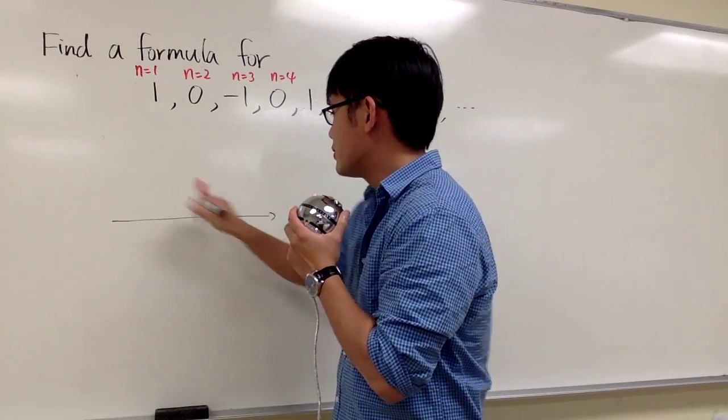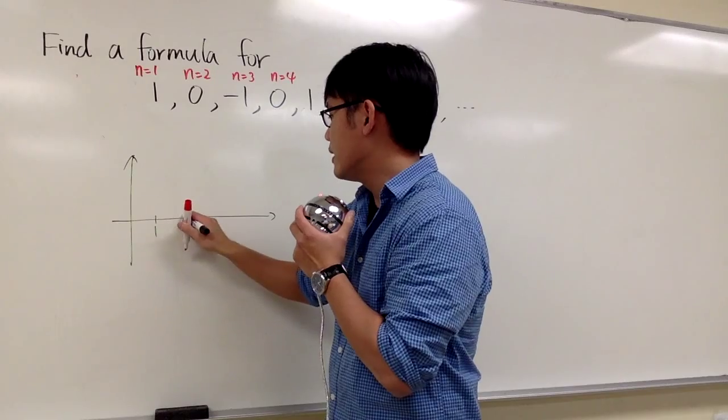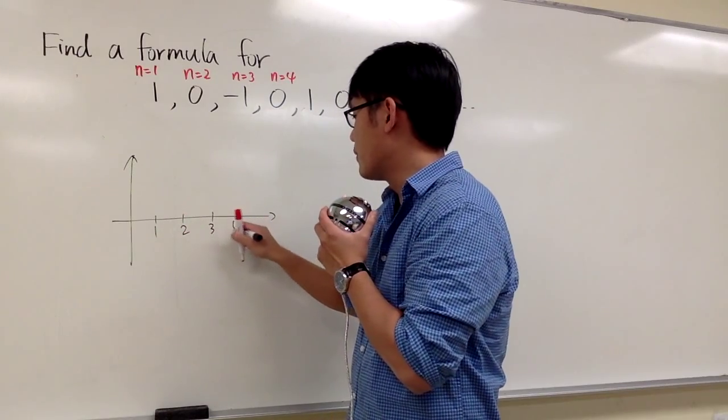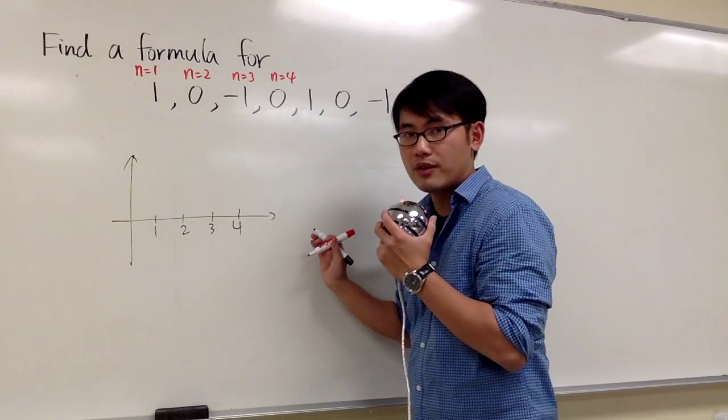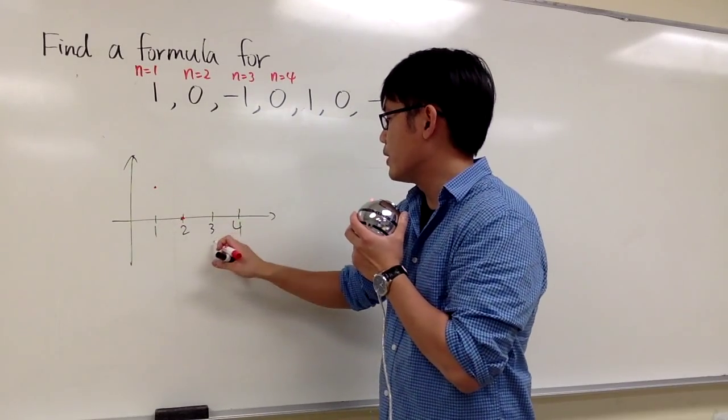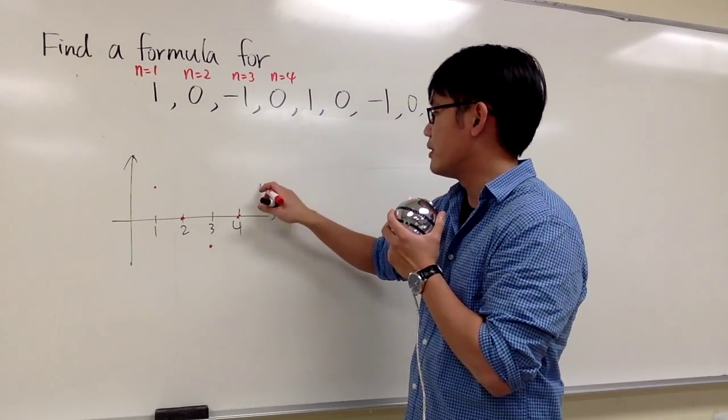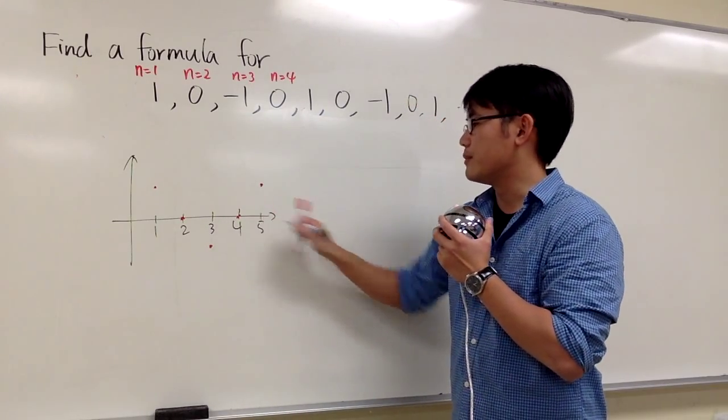And if you just want to make a quick sketch, and right here we are talking about n is equal to 1, and then 2, and then 3, and then 4, and then go on forever. And let's just say the 1 is right here, and then the 0 is right here, and then the negative 1 is right here, and then 0 is right here, and then 1 is right here for the fifth term, right?